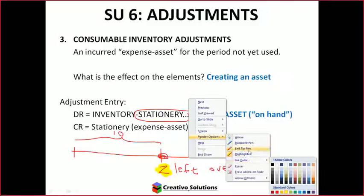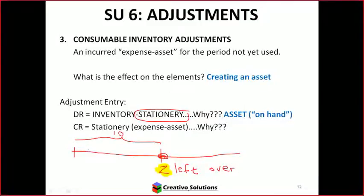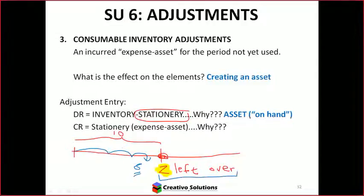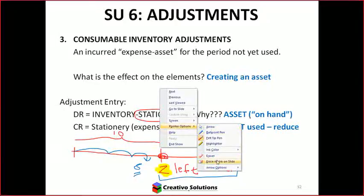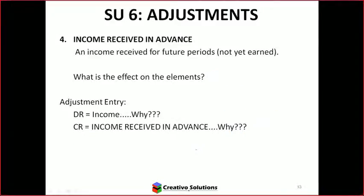That's why we represent the two as being an asset we still haven't used yet — a consumable inventory on hand scenario. I've only used eight up until the end of the financial year. Two hasn't been used yet, so we'll use it next year. The two left over from the current year will be used in the following year. That's why we're crediting the stationery: it's not used, so we reduce the expense.